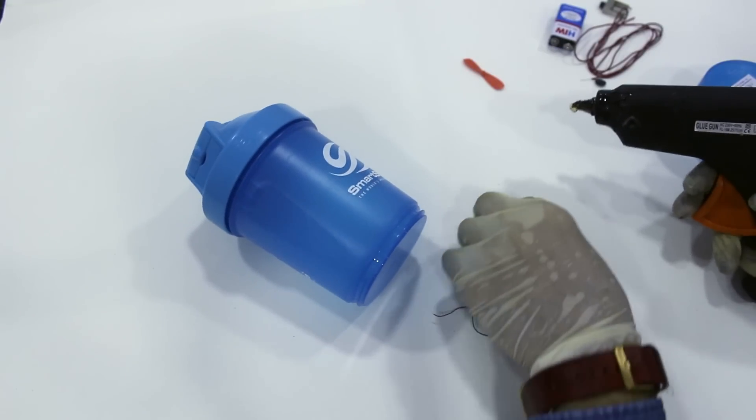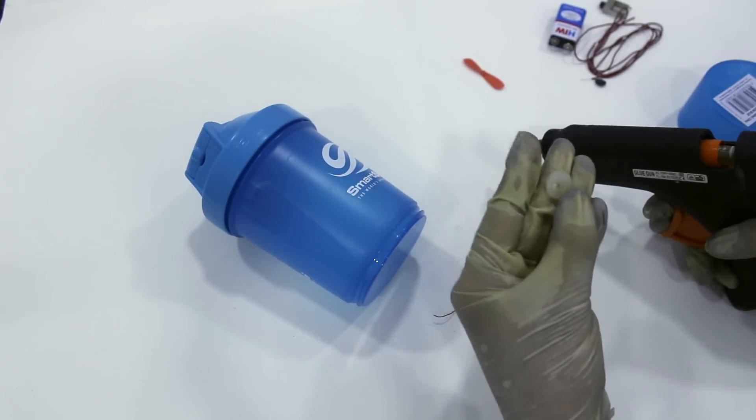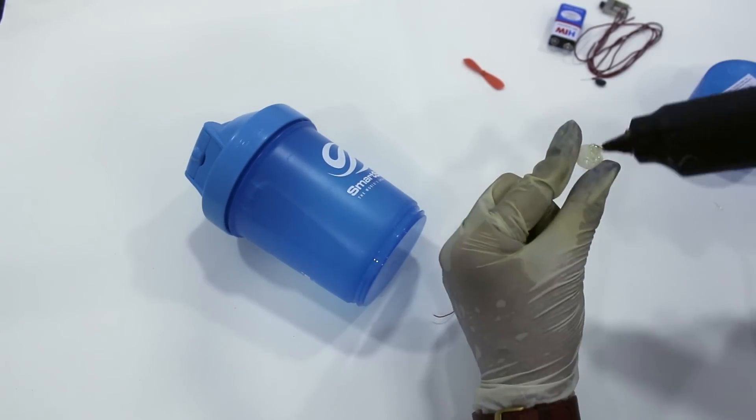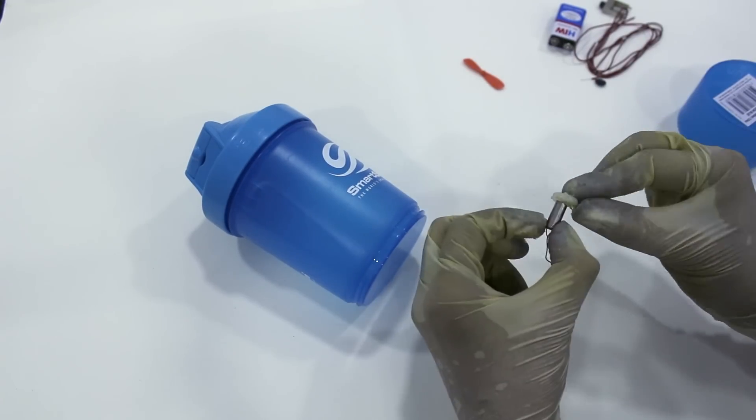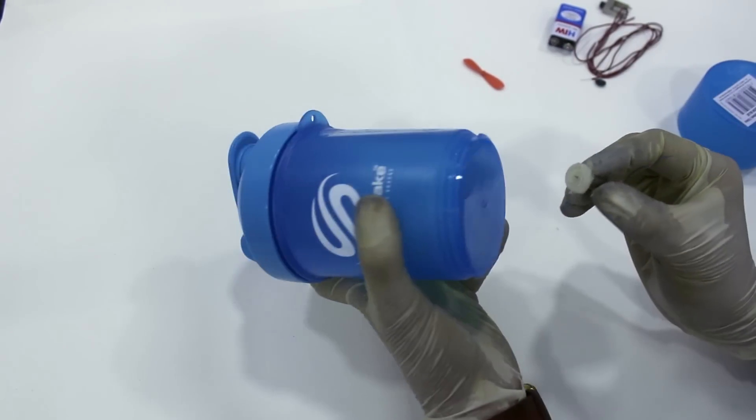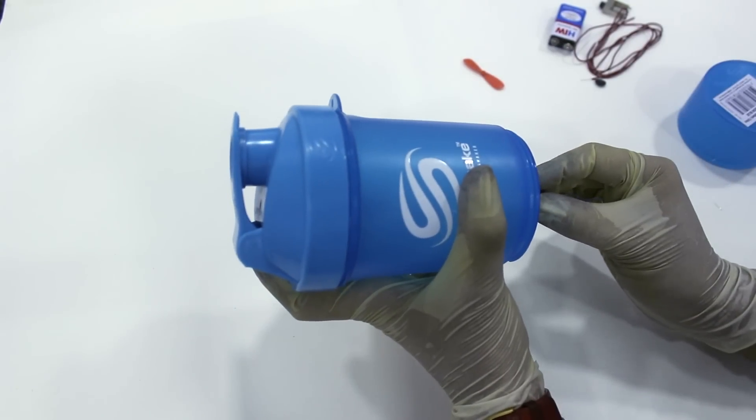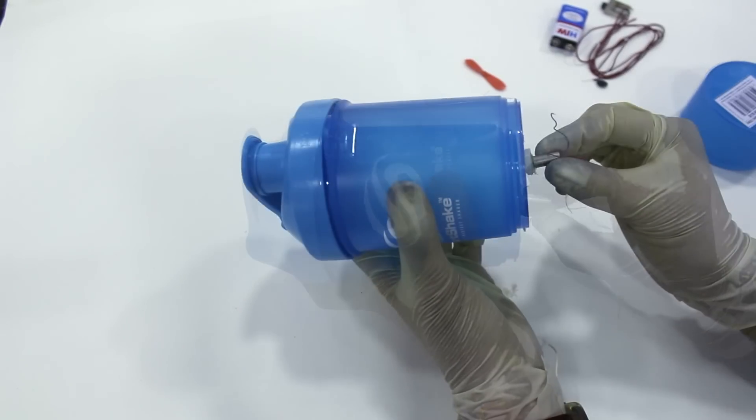Now we take a little powerful brushless motor and we stick a rubber water sealant using hot glue on it. Now we stick the motor assembly on the back of the shaker using hot glue.